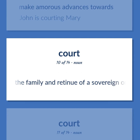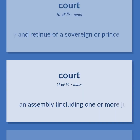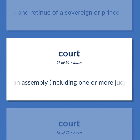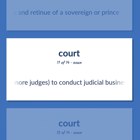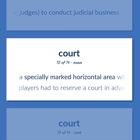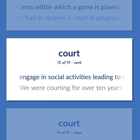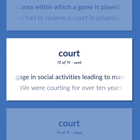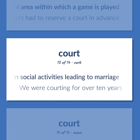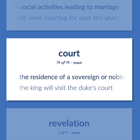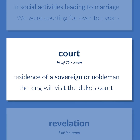The family and retinue of a sovereign or prince. An assembly, including one or more judges, to conduct judicial business. A specially marked horizontal area within which a game is played; players had to reserve a court in advance. Engage in social activities leading to marriage. We were courting for over ten years. The residence of a sovereign or nobleman. The king will visit the duke's court.